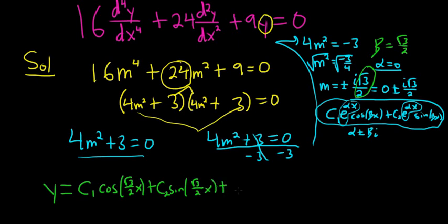Plus - and now we have to write it again but multiply by x. Because this showed up twice, we have a repeated root.